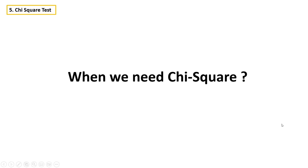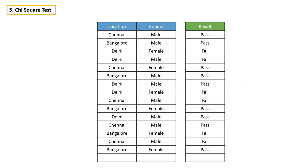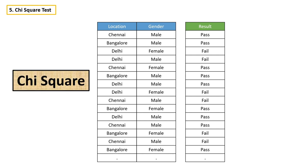When do we need chi-square? If the independent variables are categorical and the dependent variable is also categorical, and we want to know whether there is any relationship between the independent and dependent variable, then we have to use chi-square.